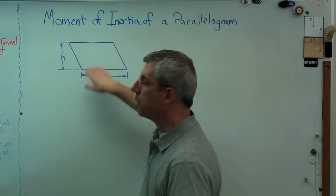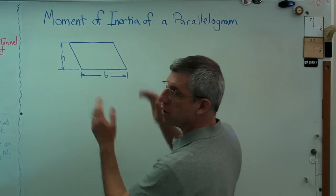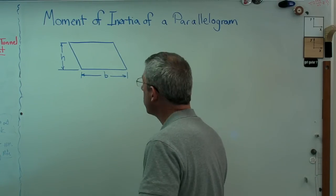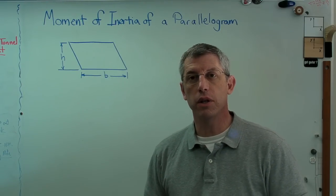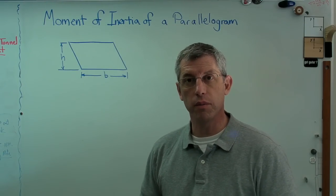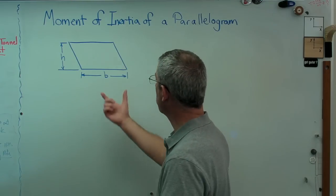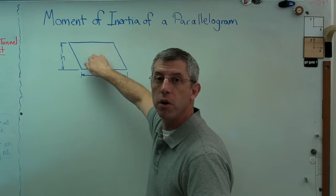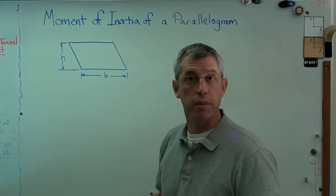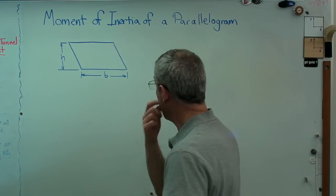Here's what a parallelogram looks like - it's basically just a square that's been sheared over like that. We all know the area moment of inertia of a square is one-twelfth b times h cubed, one-twelfth the base times the height cubed. I'm going to show you here how the area moment of inertia of a parallelogram is also one-twelfth bh cubed.